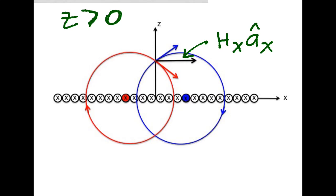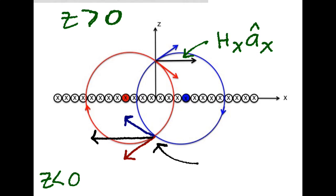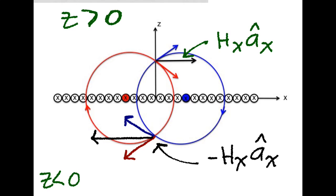Now we can do the same thing below the plane, that is for z less than zero. The magnetic field intensity due to the current filament on the right and the one on the left sum such that for an equal distance below, the magnetic field intensity at this point will have the same amplitude H_x, but it will now be in the minus a_x direction.